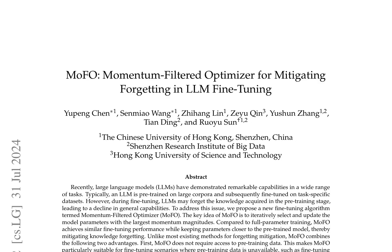MoFo: Momentum Filtered Optimizer for Mitigating Forgetting in LLM Fine-Tuning. This paper proposes a new fine-tuning algorithm, MoFo (Momentum Filtered Optimizer), to address the issue of forgetting pre-training knowledge in large language models. Unlike existing methods, MoFo does not require access to pre-training data and does not alter the original loss function. It iteratively selects and updates the model parameters with the largest momentum magnitudes.